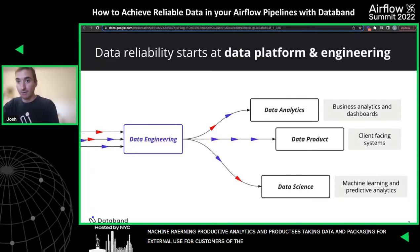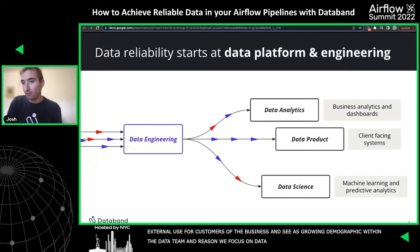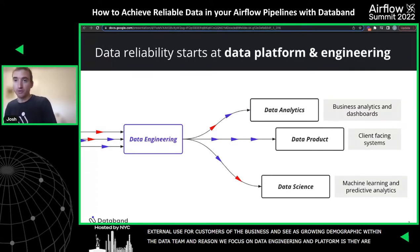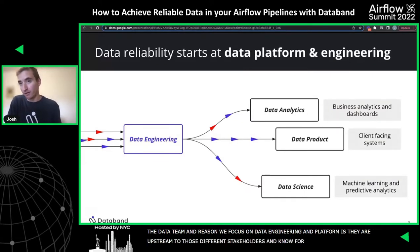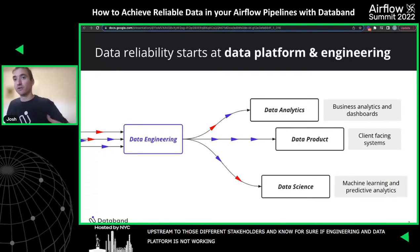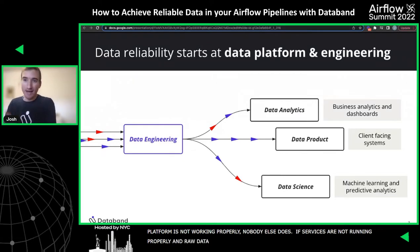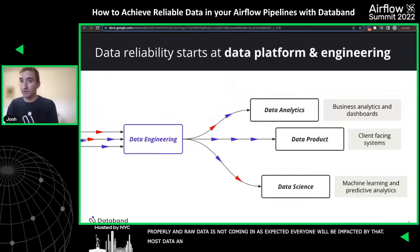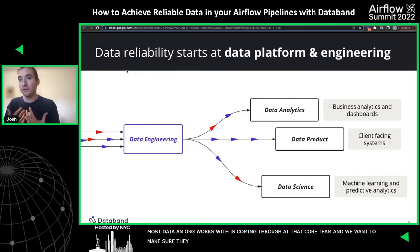We see that as a growing demographic within the data team. The reason we focus on data engineering and data platform is because they are upstream to those different stakeholders. We know for sure if engineering and data platform is not working properly, nobody else does. If services aren't running properly or raw data isn't coming in as expected, everyone else is going to be impacted. So we want to make sure they are working effectively and delivering good, reliable data to the rest of the business.